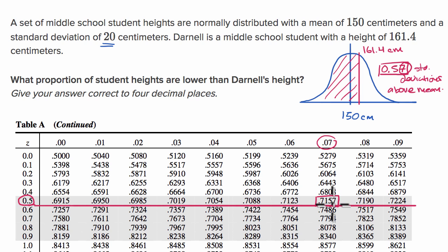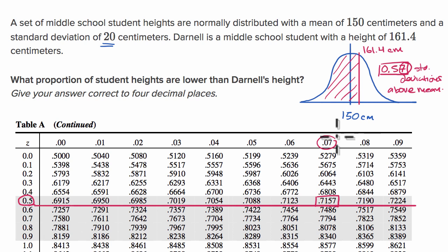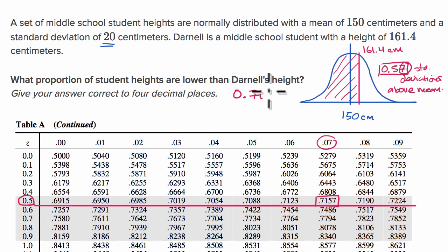Another way to think about it: if the heights are truly normally distributed, 71.57% of students would have a height less than Darnell's. So the answer to the question — what proportion of students' heights are lower than Darnell's height — is 0.7157, which is exactly four decimal places as required.